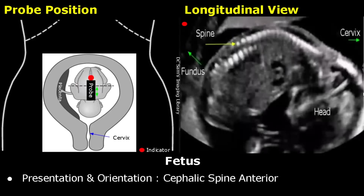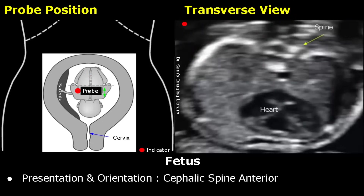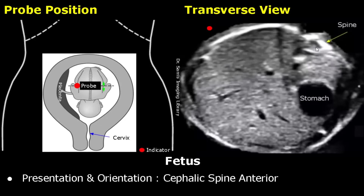Another orientation is cephalic spine anterior. By placing the probe in this longitudinal orientation, we will get this image. The spine is seen at the top of the image. Now we can examine each section in transverse view. The heart will be seen like this, directed towards the right side of the image. Similarly, as we move up towards the mother's umbilicus, we can locate the stomach. The spine is seen at the top of the image and the stomach will be seen in the right half of the image.